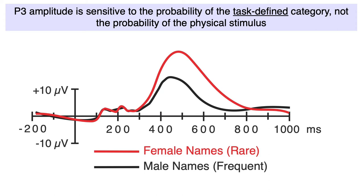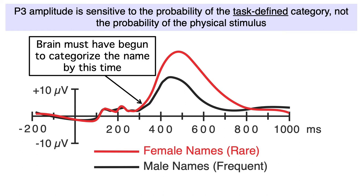Now let's consider a logical implication of this study that wasn't obvious back in the 1970s. Because P3 amplitude depends on the probability of the task-defined category, the ERPs can't differ between the oddballs and the standards until the brain has begun to determine which task-defined category a given stimulus belongs to. If the brain hasn't determined that Nancy belongs to the rare category and Michael belongs to the frequent category, how could Nancy elicit a larger P3 than Michael? So if the rare and frequent stimulus categories elicit different amplitudes by 300 milliseconds, we can logically conclude that the brain has begun to classify the stimuli into the rare and frequent categories by 300 milliseconds.